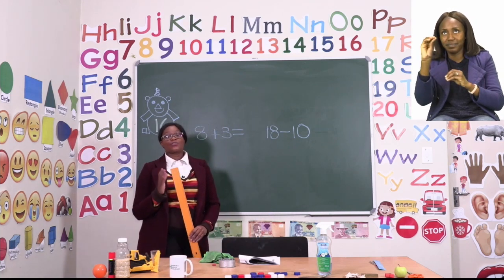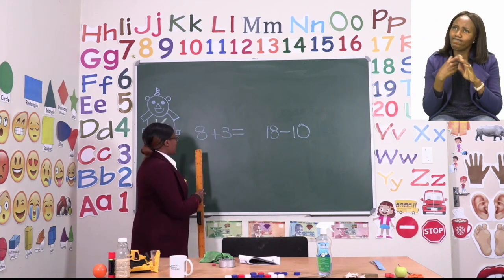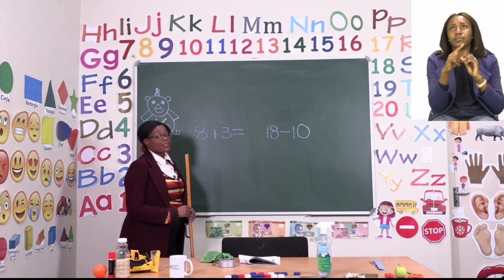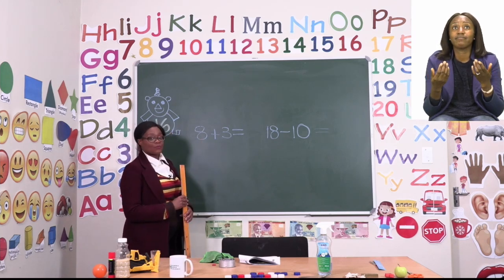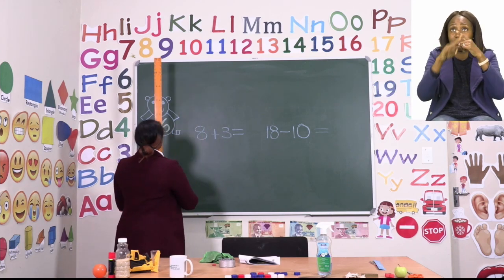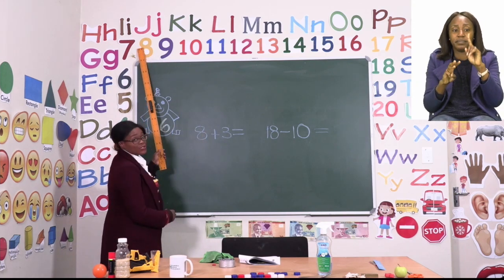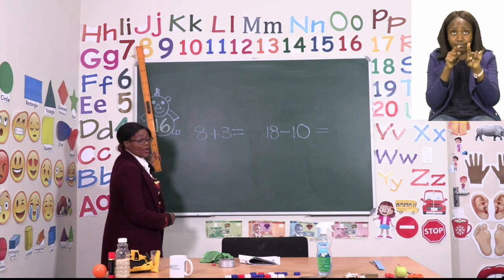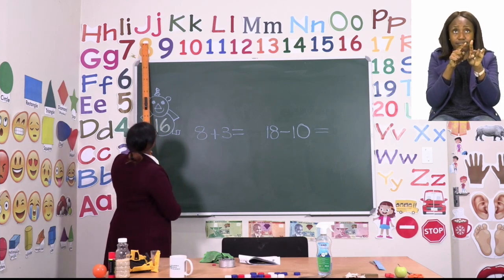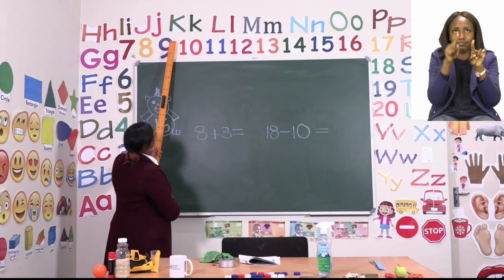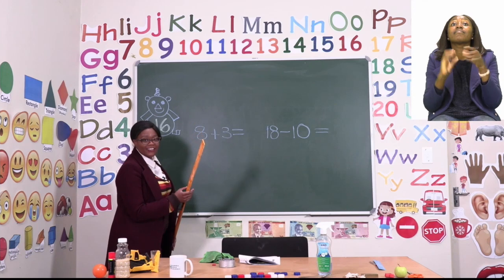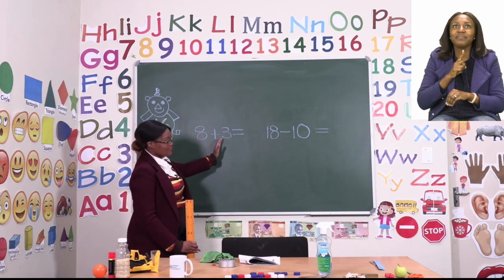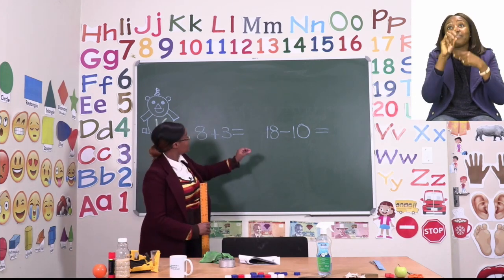Now remember, we start on the smaller number. In this case, 8 plus 3. To make it quicker, instead of starting on the smaller number, let's start on the bigger number and then add 3. So 8 is up here — I want you to go to your 8 and then we are going to hop 3 times. Let's go: 1, 2, 3. We have landed on 11. So 8 plus 3 will give us 11.